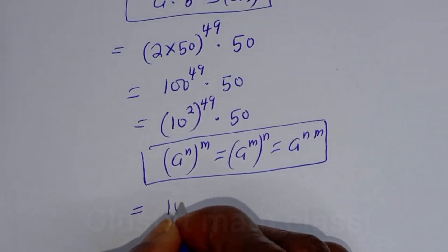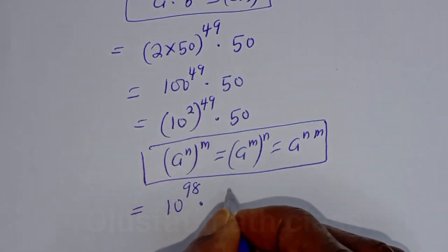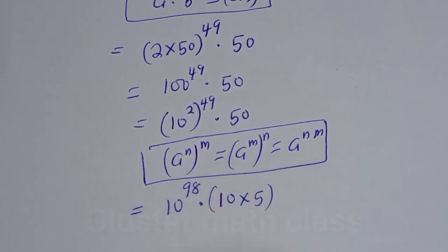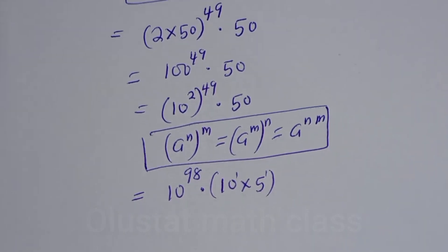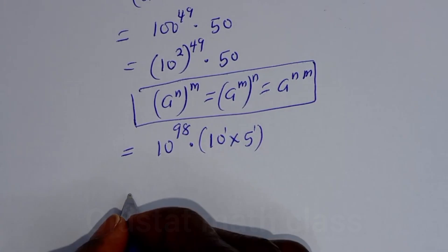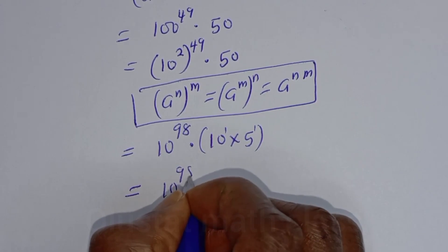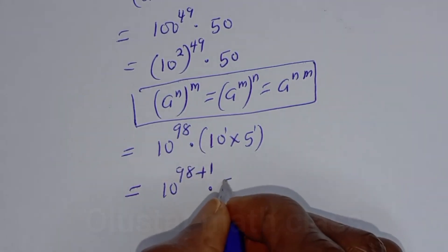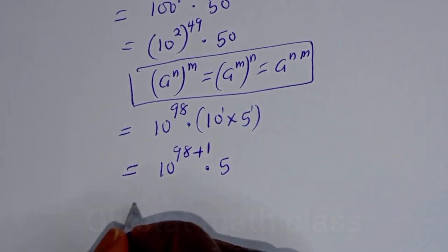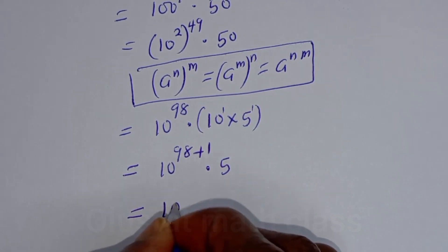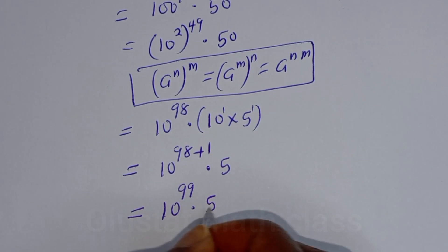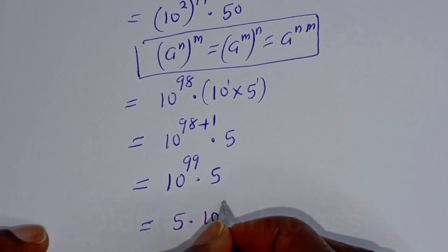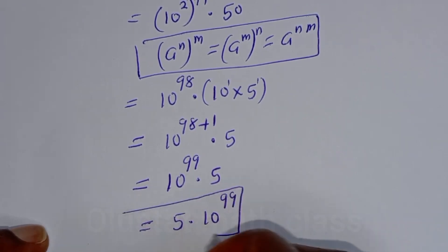So we have 10 raised to power 49 times 2, that is 10 raised to the power of 98, multiplied by 50. And 50 can be written as 10 multiplied by 5, which is 10 raised to power 1 times 5. So this is equal to 10 raised to power 98 plus 1, giving us 10 raised to power 99 multiplied by 5. Our final answer is 5 multiplied by 10 raised to power 99.